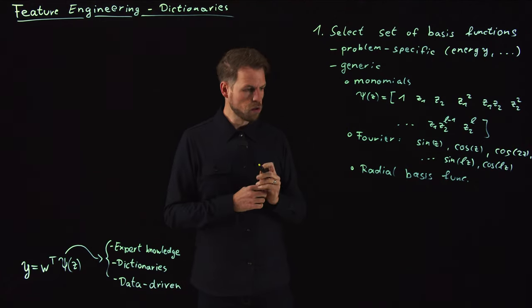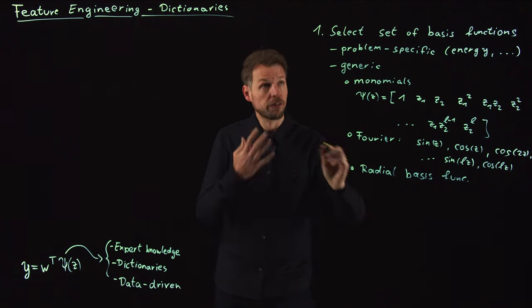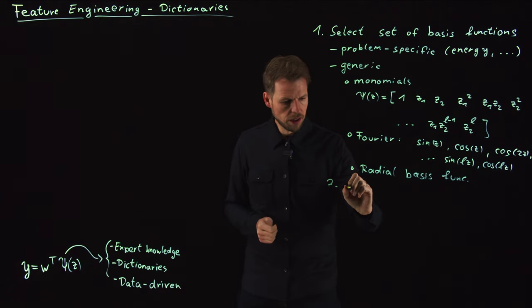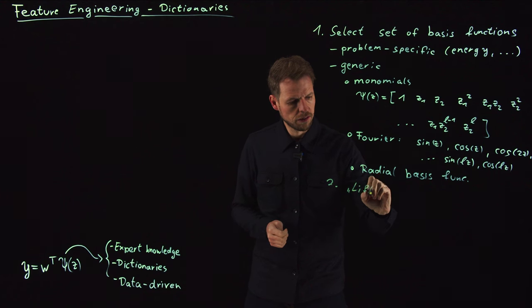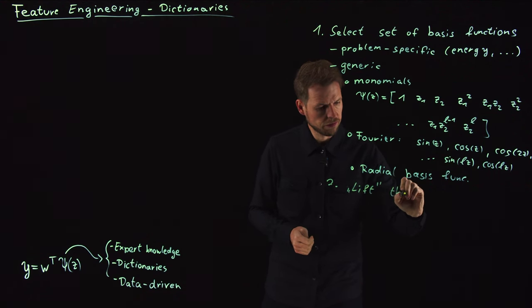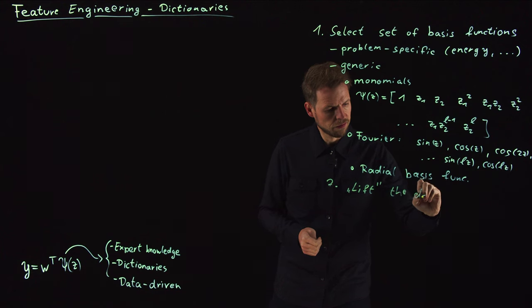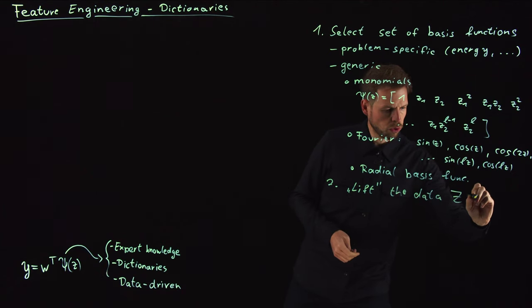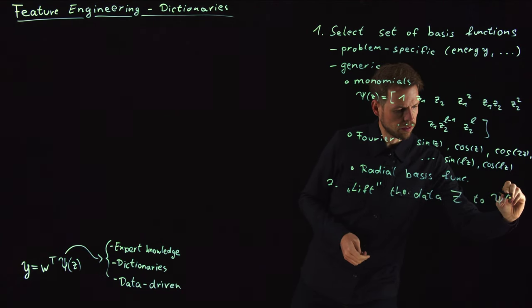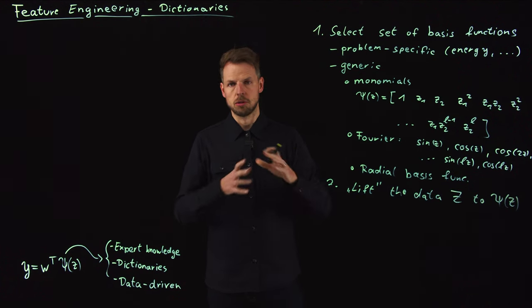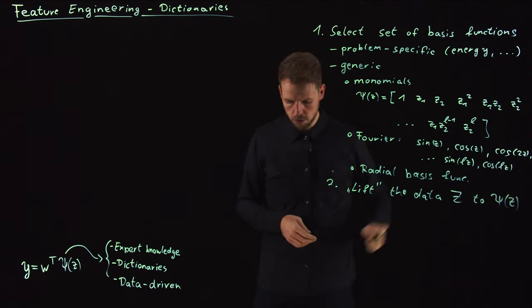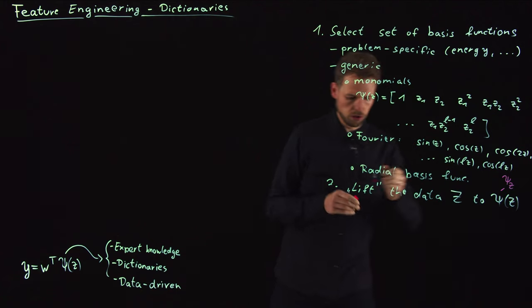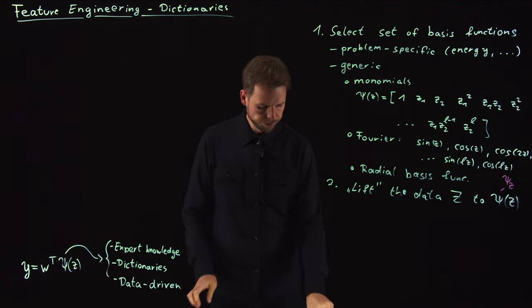And so then what you can do is, you use this, or you have defined your dictionary, this is your expert choice. And then step two is to lift the data. So you have your capital Z, this is your data matrix, to Psi of Z. This is applied column-wise now. We can also give it a name. Let's call it Psi with subscript Z in order to denote that this is now our transformed input.